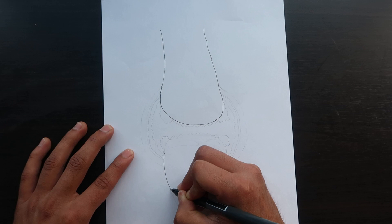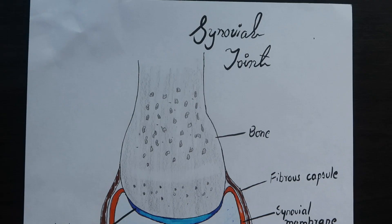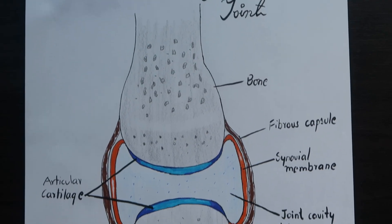Now before moving on to the joint findings of osteoarthritis, let's look at the normal anatomy of synovial joint.